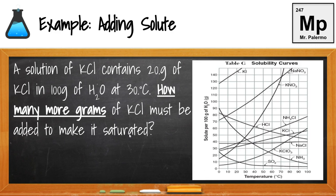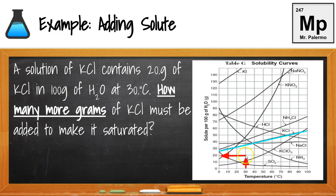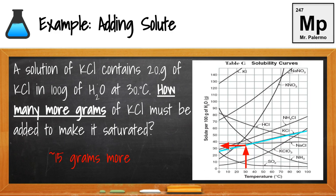Another example involves adding solute to reach saturation: a solution of potassium chloride (KCl) contains 20 grams in 100 grams of water at 30°C. How many more grams of KCl must be added to make it saturated? We start with an unsaturated solution at 20 grams. Locate the KCl line, find 30°C — the saturation point is about 35 grams. We started at 20 grams and the maximum is 35 grams, so 35 minus 20 means we can add 15 more grams to reach saturation at 30°C.